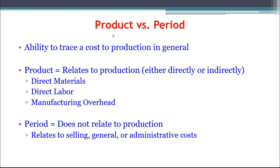Product versus period is another classification that asks: does this cost relate to production or not? Product costs relate to production — either directly, like direct materials and direct labor, or indirectly, like manufacturing overhead — essentially anything related to the factory. Period costs, on the other hand, do not relate to production. They relate to the store, the office, or the headquarters.